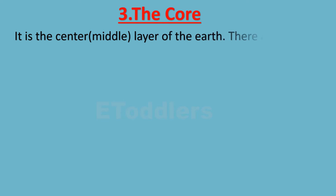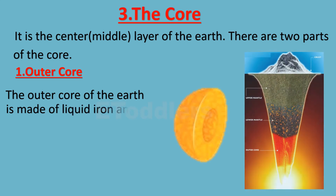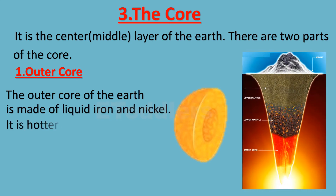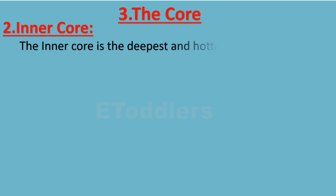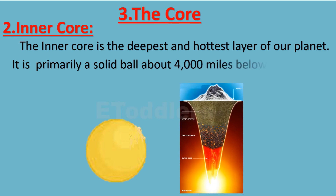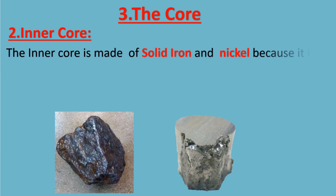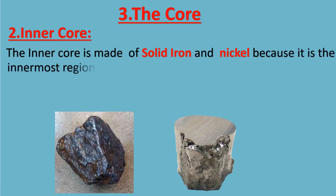The core is the center layer of the earth. There are two parts of the core. The outer core is made of liquid iron and nickel and is hotter than the mantle. The inner core is the deepest and hottest layer of our planet. It is primarily a solid ball about 4000 miles below the surface, made of solid iron and nickel because it is the innermost region of the earth.